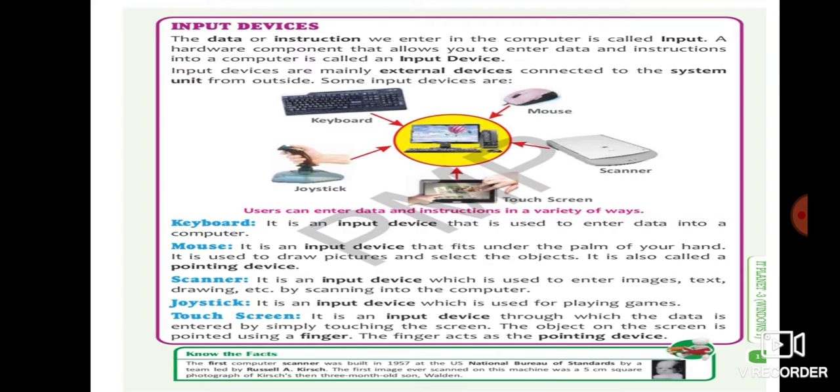Next is scanner. It is used to enter images, text or drawing into the computer. So whenever we are scanning any of the image or any of the drawing it is automatically stored in the computer. So for that purpose we are using scanner. Next is joystick. Joystick is an input device which is used for playing games. So next is touch screen. It is used by simply touching the screen with our fingers. So here our fingers act as pointing device.